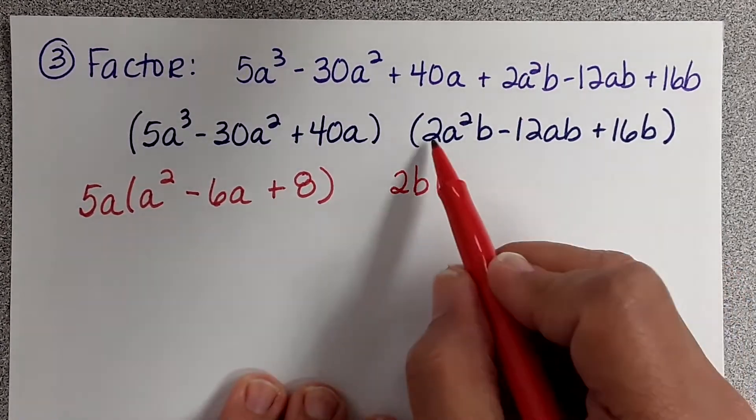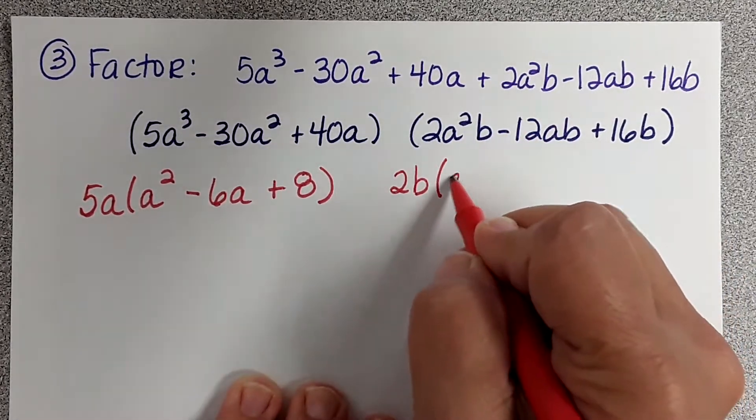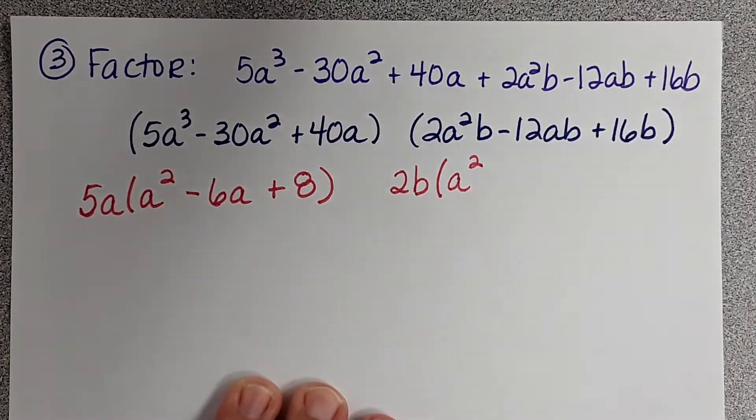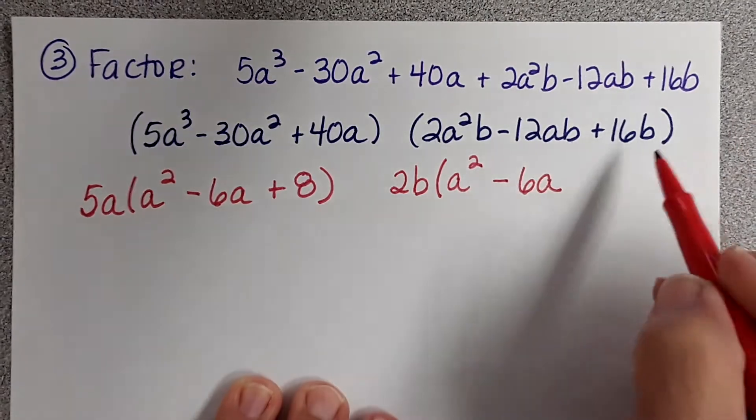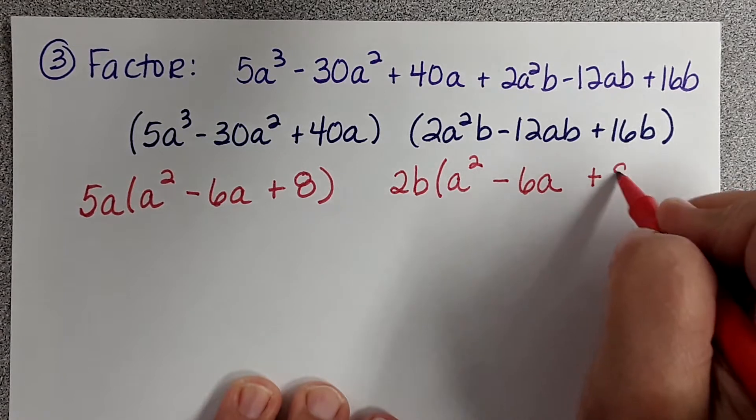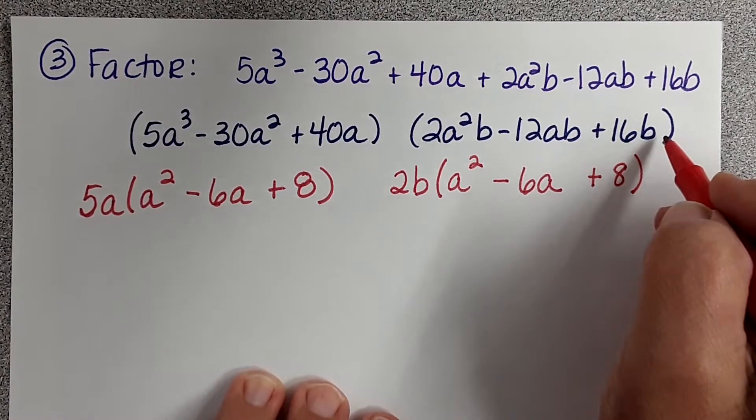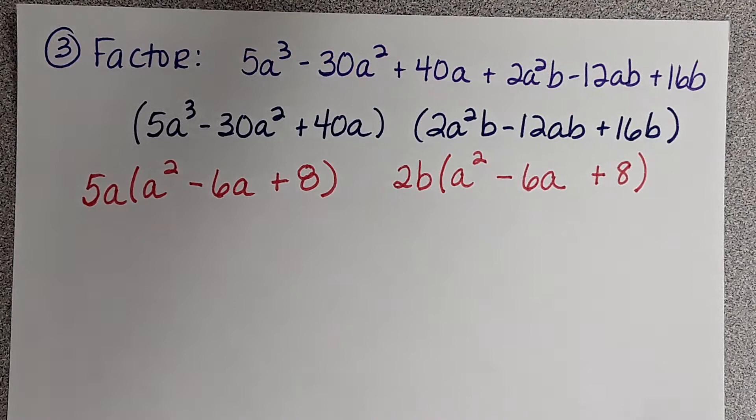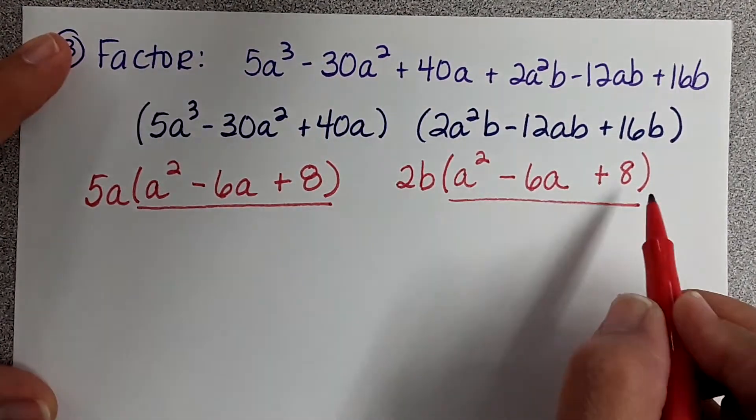So, what's left? I took 2B away from 2A squared B. So, I'm going to be left with A squared. 12AB divided by 2B is negative 6A. 16B divided by 2B is 8. Look at that, you guys. Isn't that nice? This, this, and this match. Perfect.